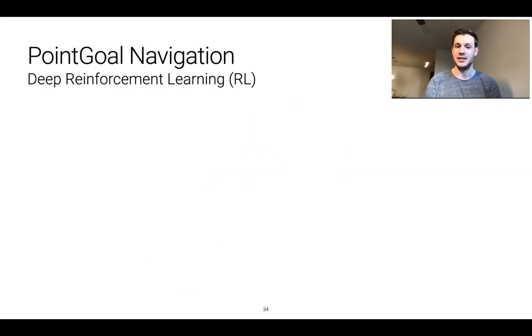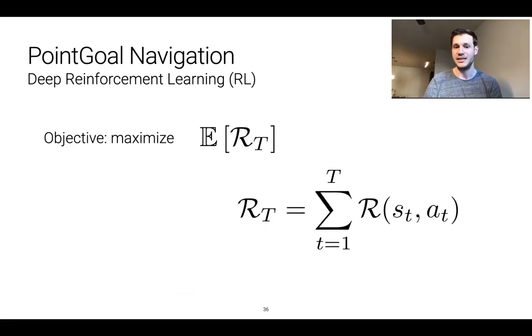We're then going to train this agent using deep reinforcement learning. Deep reinforcement learning has the following general objective: it seeks to maximize the expected reward over the trajectory of an episode. So as the agent goes along with its episode completing its task it receives reward and it wants to get the maximum reward that it can. I won't dive too deep into deep reinforcement learning in this tutorial as there are other resources out there such as online classes and other tutorials that cover this quite well.